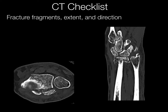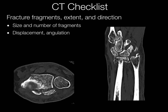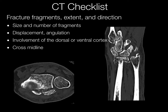We also want to mention the fracture fragments: the extent, direction, size, and number of fracture fragments, displacement, angulation, whether the fracture extends to the dorsal or ventral cortex, whether it crosses midline, and generally the direction of the fracture.